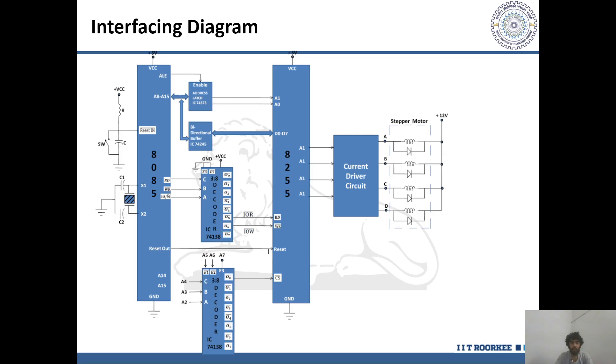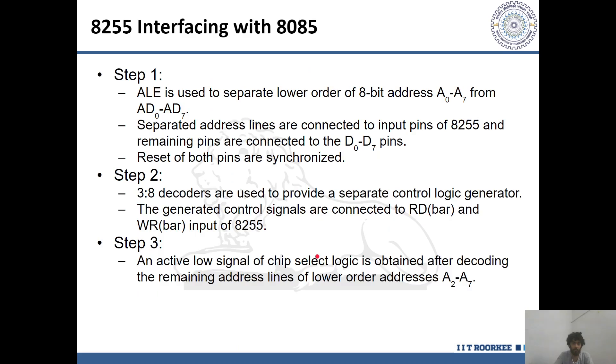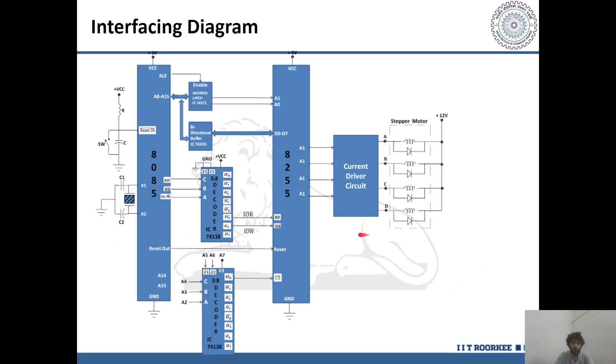The reset of the 8085 is connected to the reset pin of the 8255. Now, 8255 does not have its own internal control logic generator, so the input-output, the read-write control signals are not directly connected to the 8255. These pins are first given to the decoder and decoded using the 328 decoder and the generated control signals connected to the input of the 8255. Finally, an active low signal of chip select logic is obtained decoding the remaining address lines of the lower addresses A2 to A7. After this interfacing between the 8085 and the 8255, a current driver circuit is used which splits into four corresponding loops of the stepper motor.